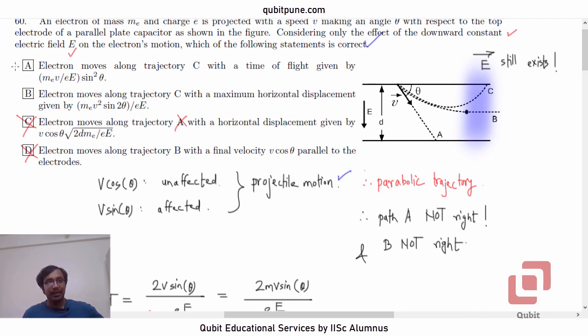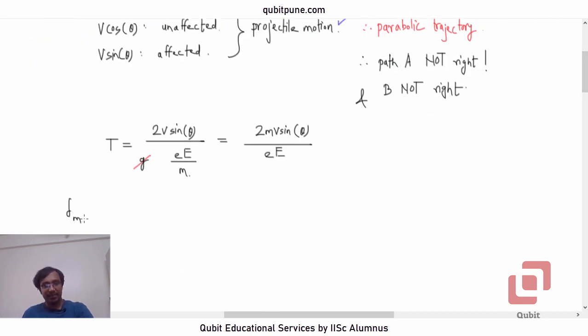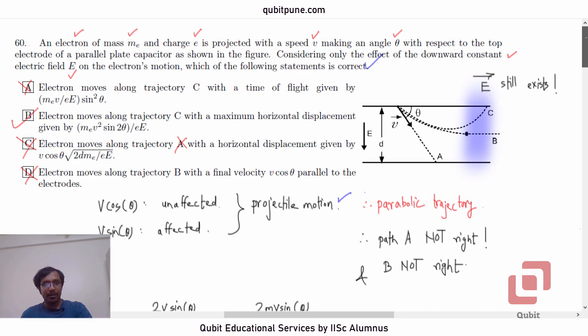So, option B must be true. But let us just confirm it once. The maximum horizontal displacement of the electron will be M e V squared sin 2 theta by E E. So, what is the maximum horizontal displacement? Let us call it delta max. That will be the distance that our electron is going to travel during time T in the horizontal direction. So, it will be V cos theta T. So, it is V cos theta into 2MV sin theta time of flight upon E E. So, it is M V squared, 2 sin theta cos theta is sin 2 theta upon E E. Is that right? M V squared sin 2 theta by E E. Yes, that is right.